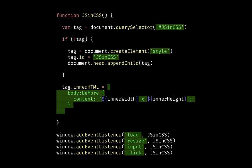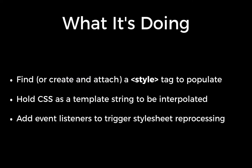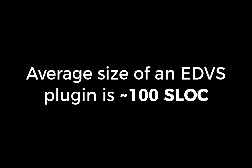When the page first loads, this virtual stylesheet gets rendered with the current values of inner width and inner height. But if we change the size of the browser, those numbers are no longer accurate. Since we've added an event listener for the resize event, it will reprocess that virtual stylesheet every time the resize event fires, meaning it will always have the current up-to-date inner width and inner height. The average size of an EDVS plugin is around 100 lines of code.